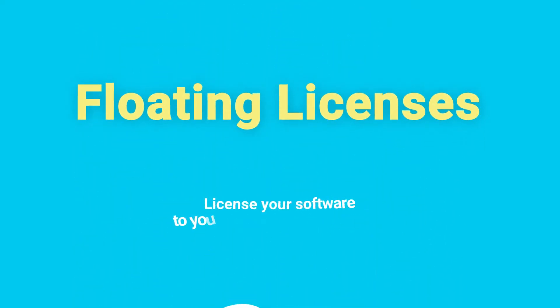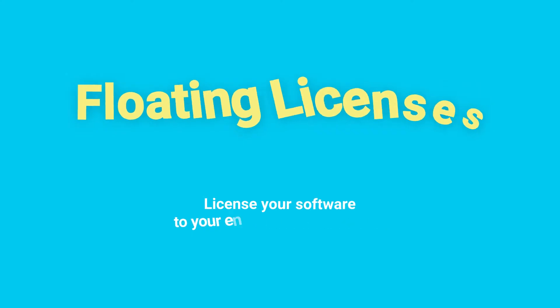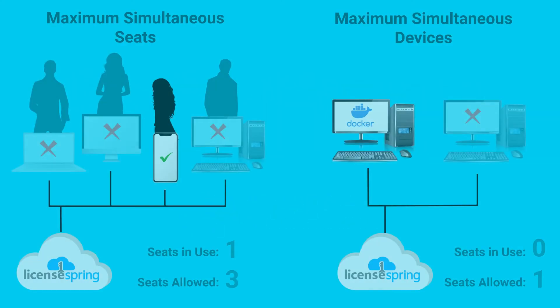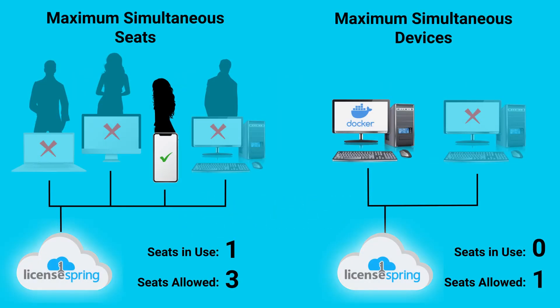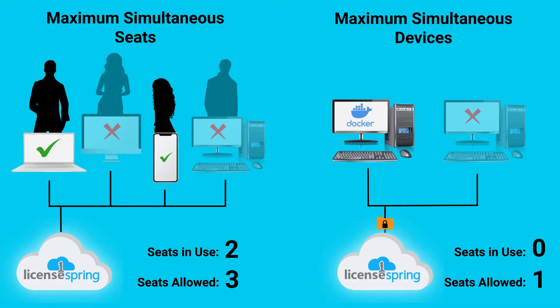This video will cover how to configure and use floating licenses in your application through LicenseSpring's Software Licensing Service. Floating licenses, also called concurrent licensing, is a mechanism that controls a number of simultaneous uses of your software.